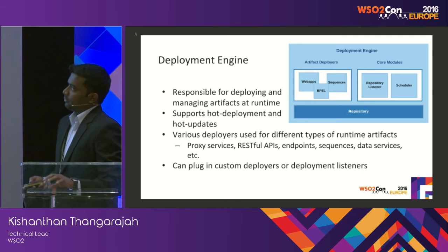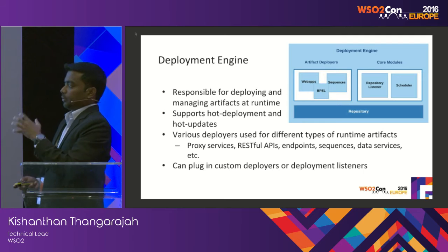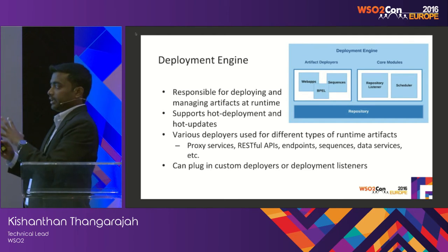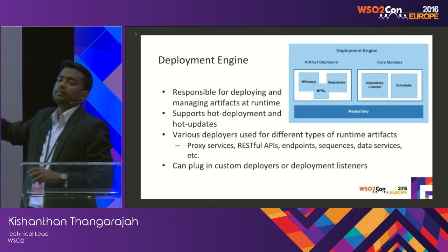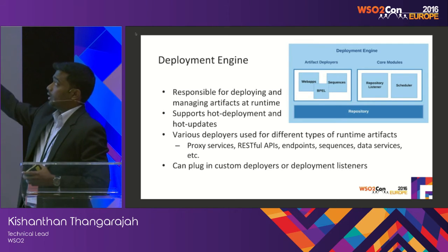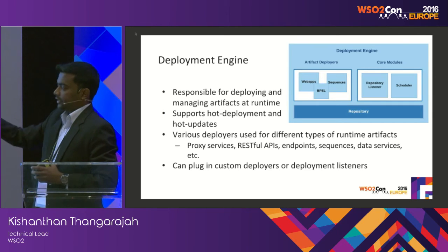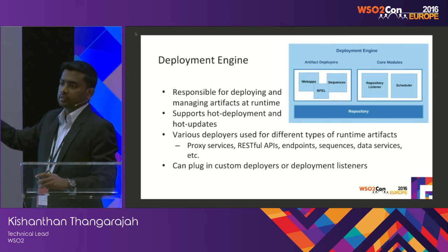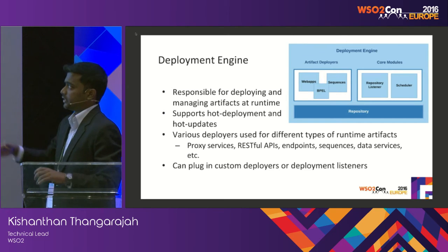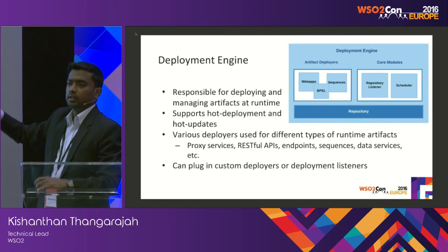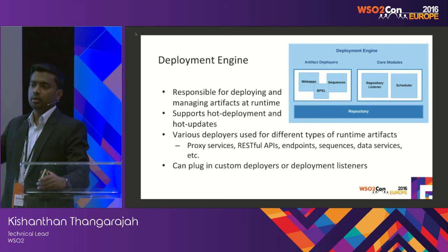The deployment engine supports various types of artifacts. You use the deployment engine and its various deployers to deploy them. The repository is a file system-based repository. A listener from the deployment engine continuously checks whether new artifacts are present or existing ones have been updated. Once it identifies new changes, it calls the relevant deployer, which then calls the relevant runtime to deploy the artifact into memory.